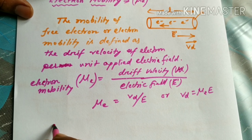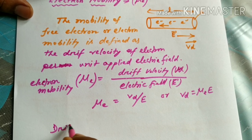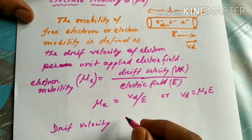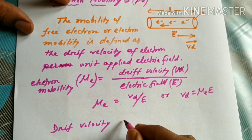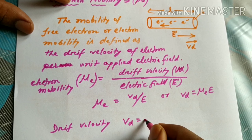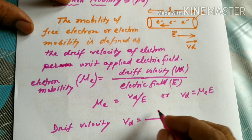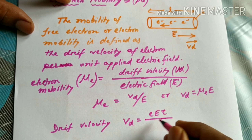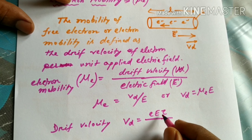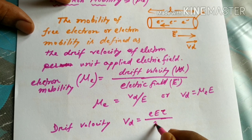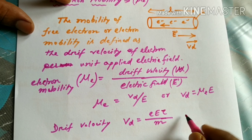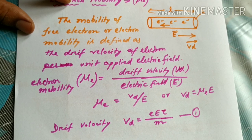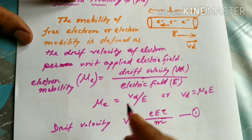We already know what drift velocity is. Vd is equal to eE times the average relaxation time tau, divided by m. I already know this expression.